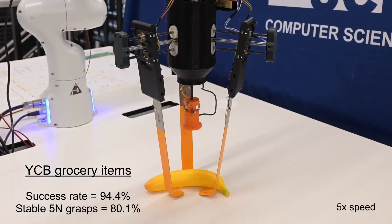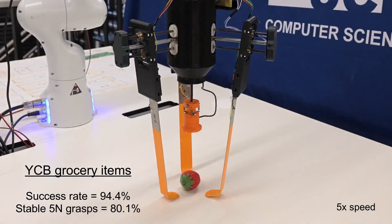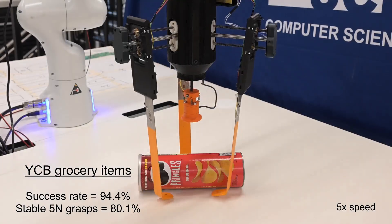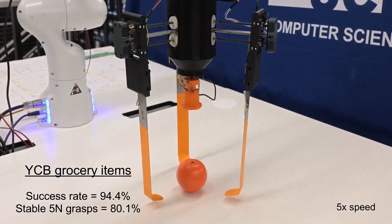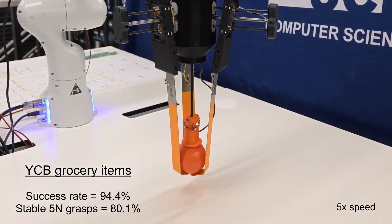We also test generalization to the 18 YCB grocery items, which are part of a standardized test set for grasping. Here, we reach 94.4% success rate, and 80.1% of these are stable 5N grasps.